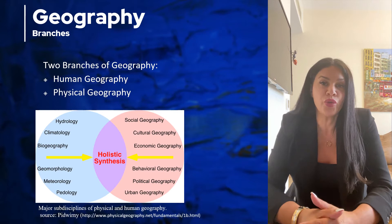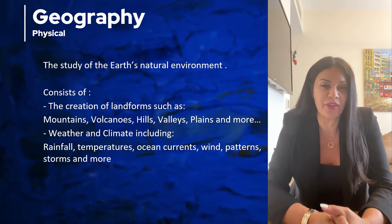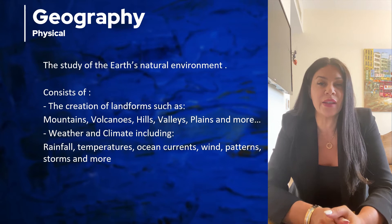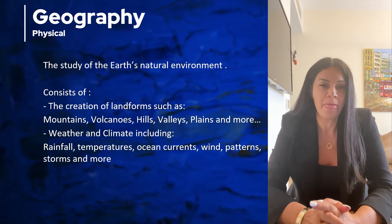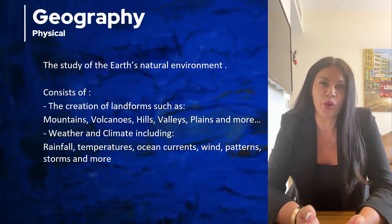Within geography, there are two main branches: physical geography and human geography. Physical geography looks at the physical characteristics of the earth. This includes the creation of mountains, volcanoes, and other landforms. It also looks at weather and climate, which impacts the type of vegetation and animals around the world, or what we call biomes.